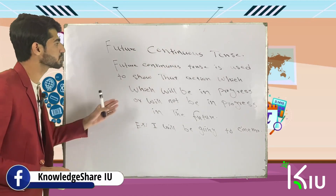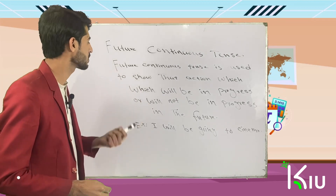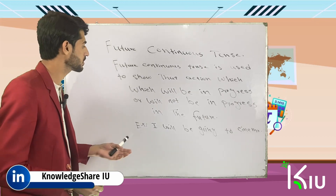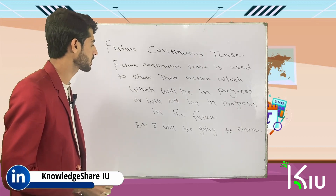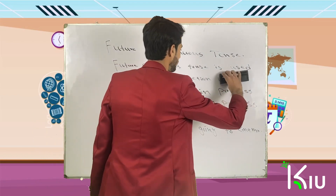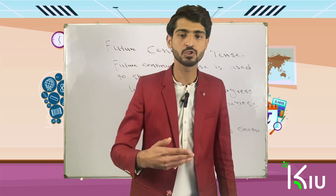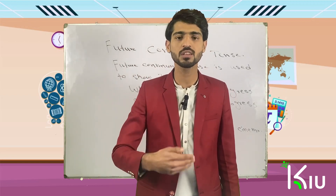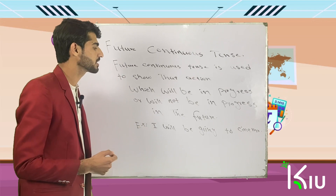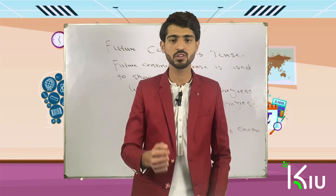What is future continuous tense? Future continuous tense is used to show that action which will be in progress, or will not be in progress, in the future. For example: 'I will be going to cinema.' If I am doing this action in the future, so it will be in progress in the future.